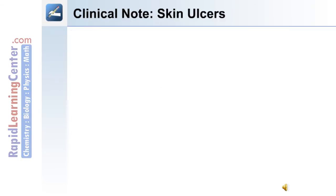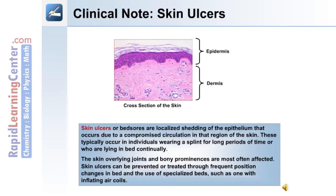The following is a clinical note on skin ulcers. Skin ulcers or bed sores are localized shedding of the epithelium that occurs due to a compromised circulation in that region of the skin. They typically occur in individuals wearing a splint for long periods of time or who are lying in bed continually. The skin overlying joints and bony prominences are most often affected. Skin ulcers can be prevented or treated through frequent position changes in bed and the use of specialized beds such as ones with inflating air coils.